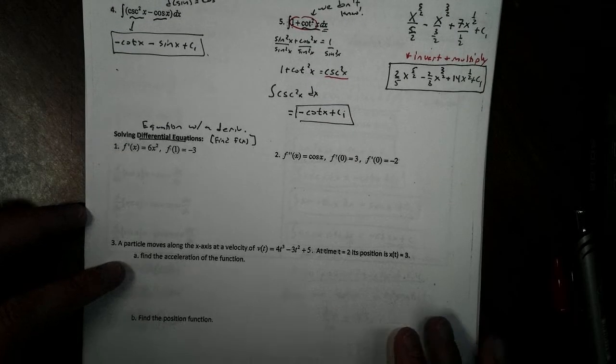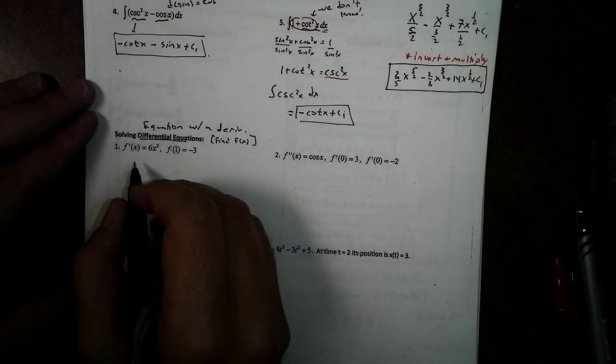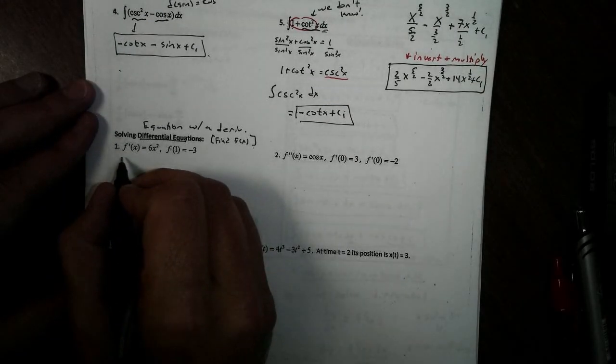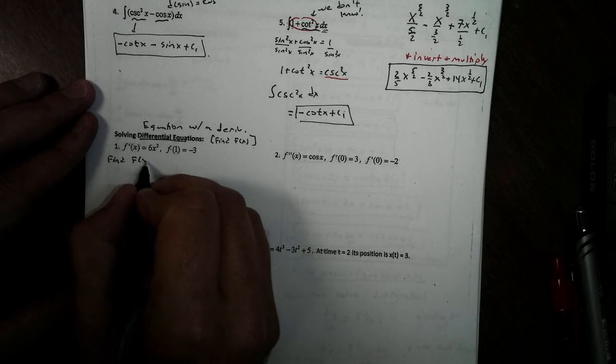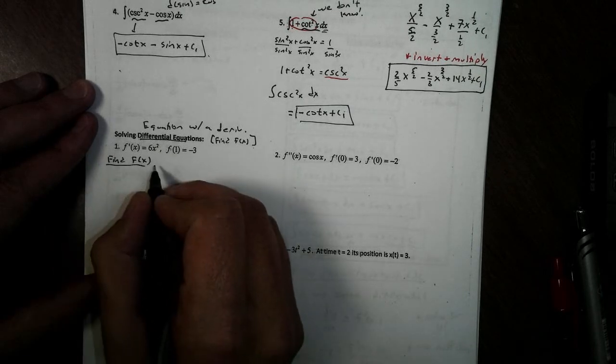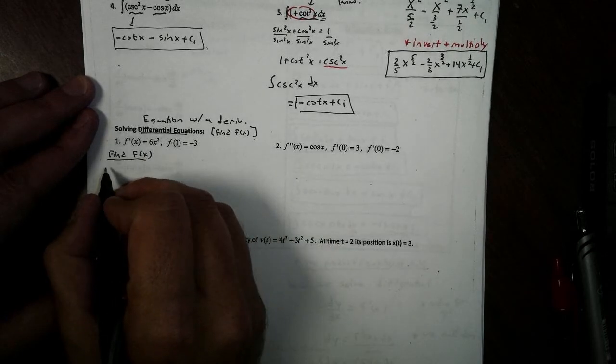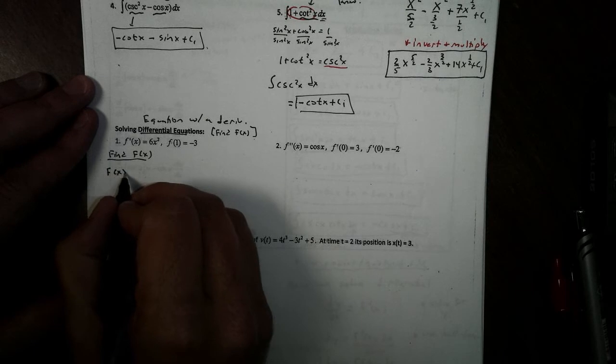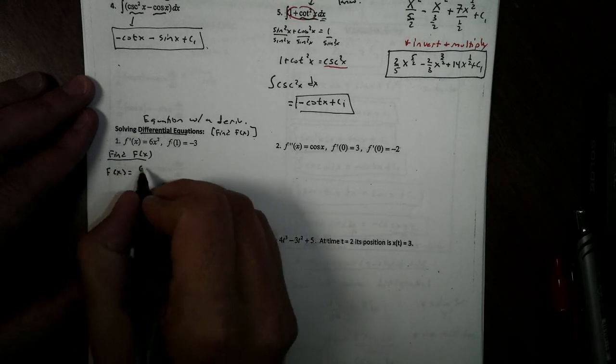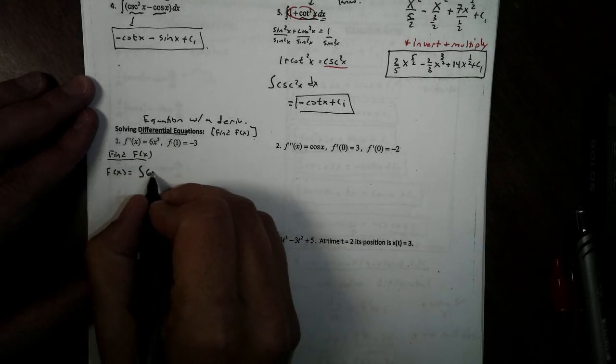So we want to find f of x. In order to do this, I am going to integrate this. We will say f of x is the antiderivative of our derivative function, 6x squared.